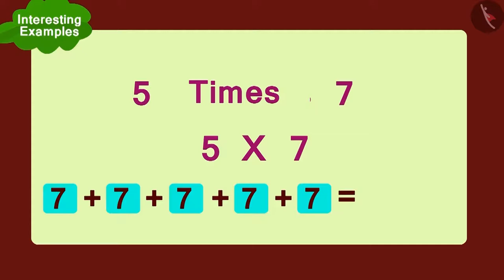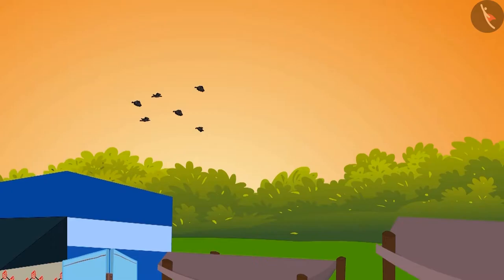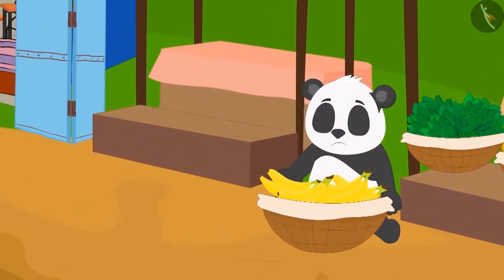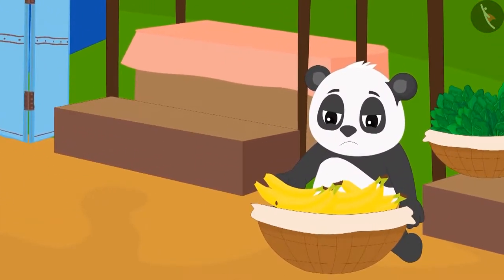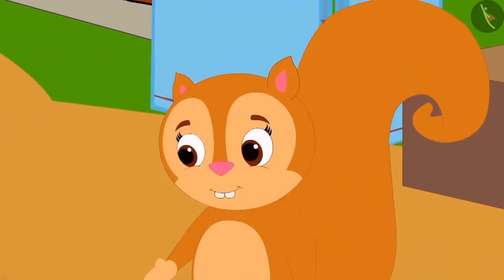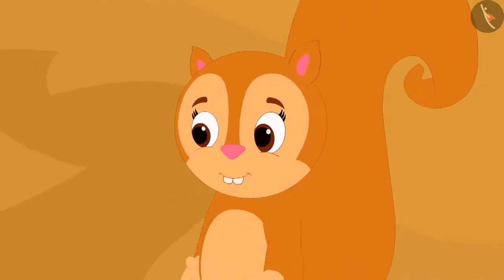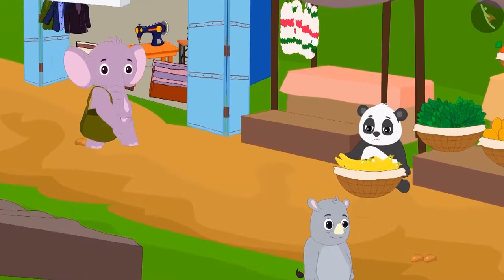The day turned into evening, but Golu couldn't sell a single banana. On the other hand, Chanda was happily going home as she sold all her flowers. Appu Elephant noticed the sad Golu and bought twelve bananas from him.